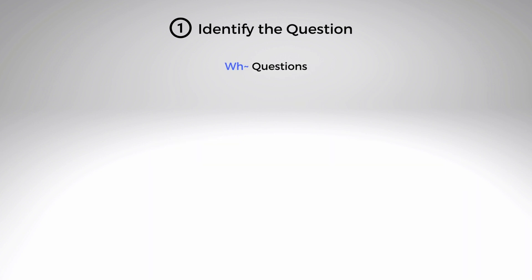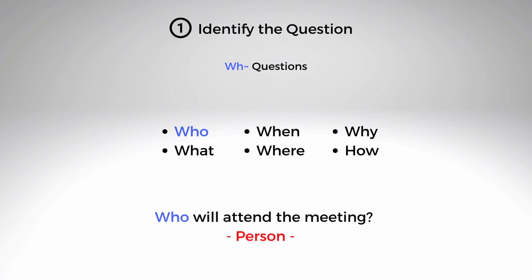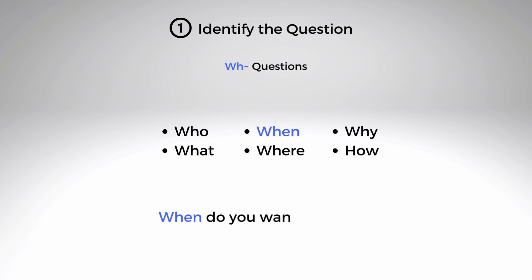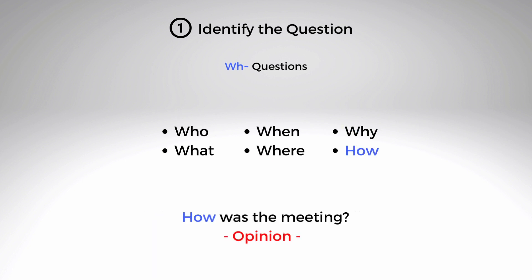WH questions — a WH question refers to a question that begins with one of six interrogatives: who, what, when, where, why, and how. In the case of WH questions in TOEIC part two, you can predict the answers if you pay close attention to the first word of the question. Knowing which WH word is being used will also tell you if the answer is a thing, a place, a date, etc.